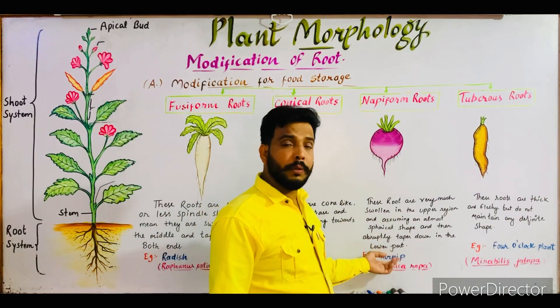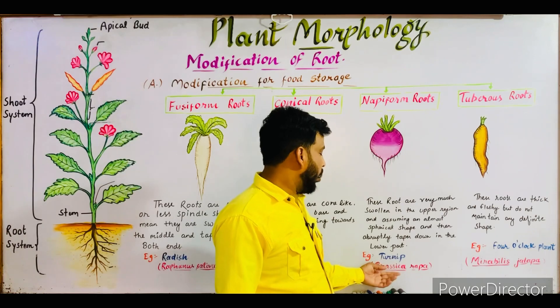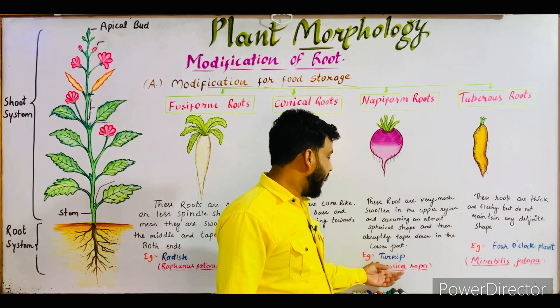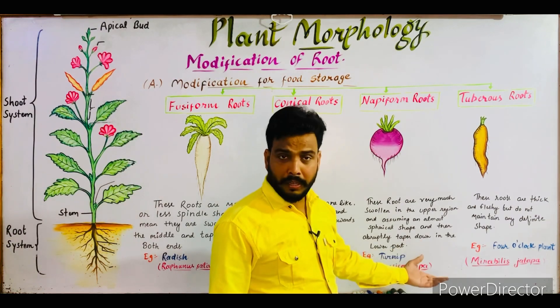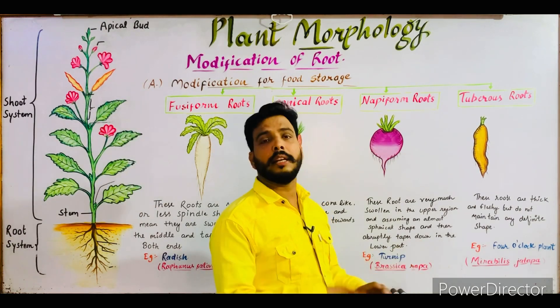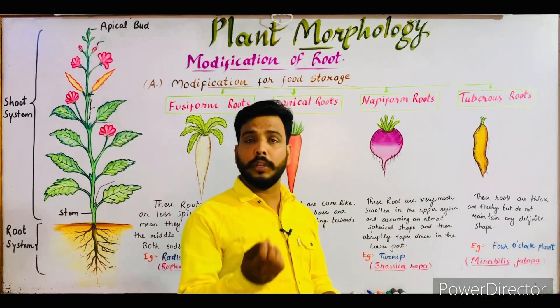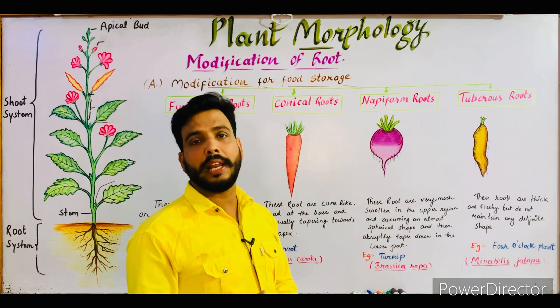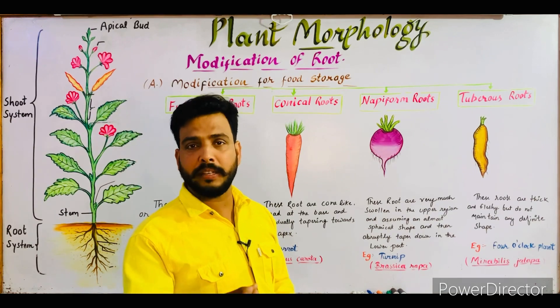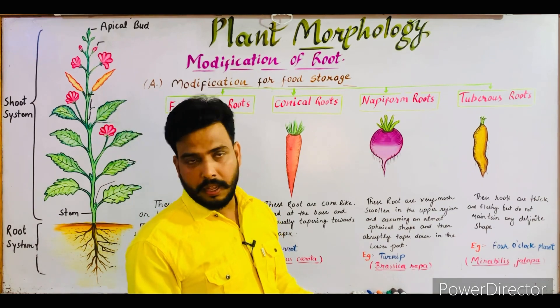This shape is known as napiform root. The example for this root is turnip, also known as Brassica rapa, and another example is sugar beet, with botanical name Beta vulgaris.